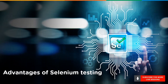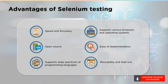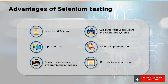Now let's look at the advantages of Selenium testing. First up, we have speed and accuracy — the testing process is quick and accurate since any human errors are ruled out. It is also open source, meaning anybody can download and start working on small projects. It supports a wide range of programming languages and operating systems. It is also very easy to implement and doesn't require a strong knowledge about the tool. And lastly, the main advantage is the fact that it is reusable.